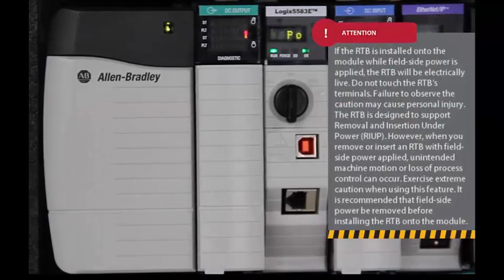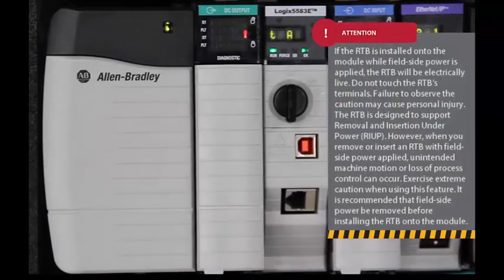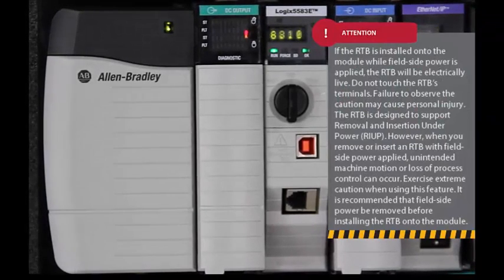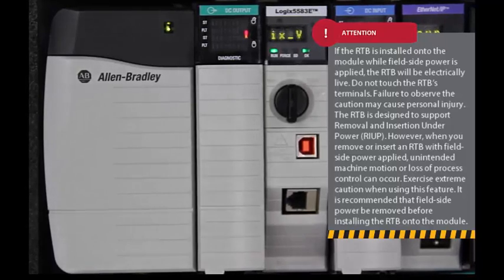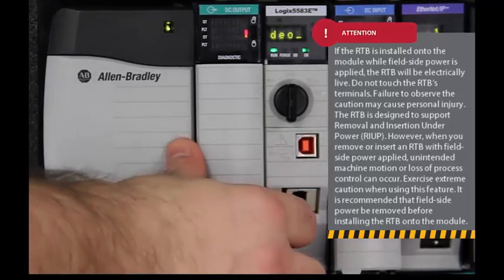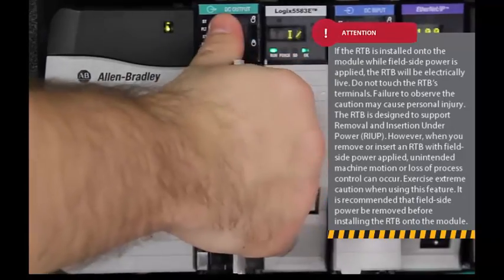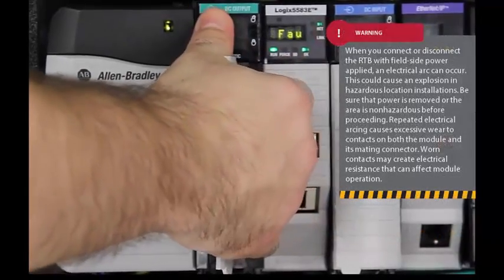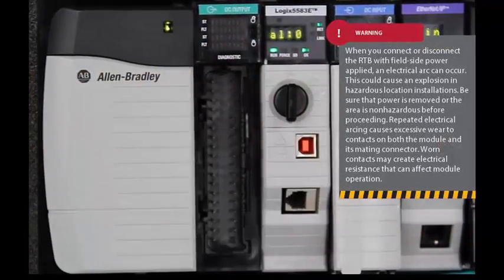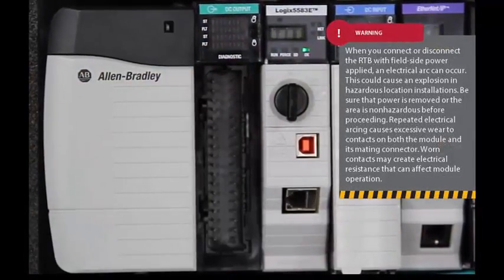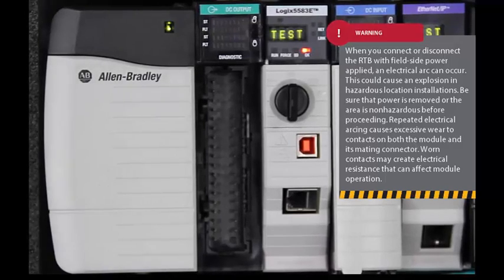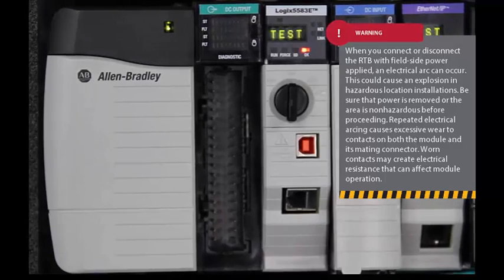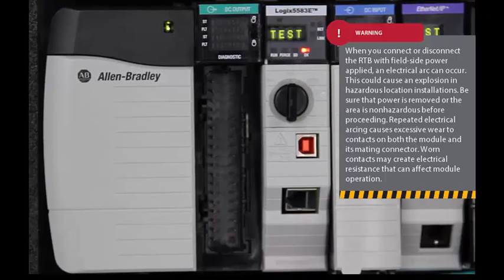ControlLogix modules have removable terminal blocks, or RTBs, that allow them to be replaced without the need for rewiring. Removing an RTB while under power or during machine operation is not recommended and could cause unpredictable behavior. Proper safety must be followed when removing or inserting modules under power.